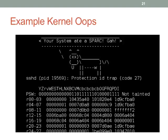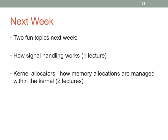Next week we're going to talk about two topics that real operating systems care about a lot: signal handling and kernel allocators. Kernel allocators are really important because fragmentation is something kernels have to think about, and kernels run longer than any other piece of software on your computer. Kernel allocators are designed very carefully to try to avoid fragmentation.